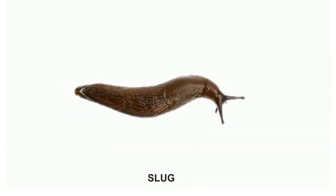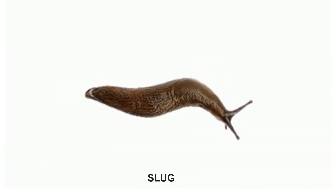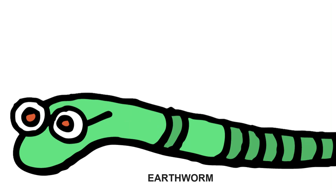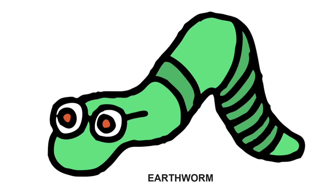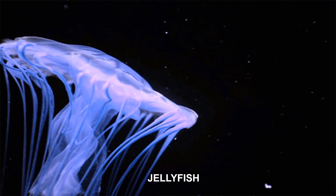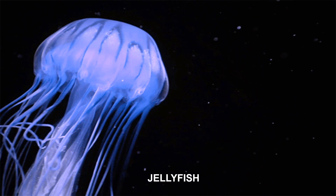Some animals don't have bones, like slugs, earthworms, and jellyfish.